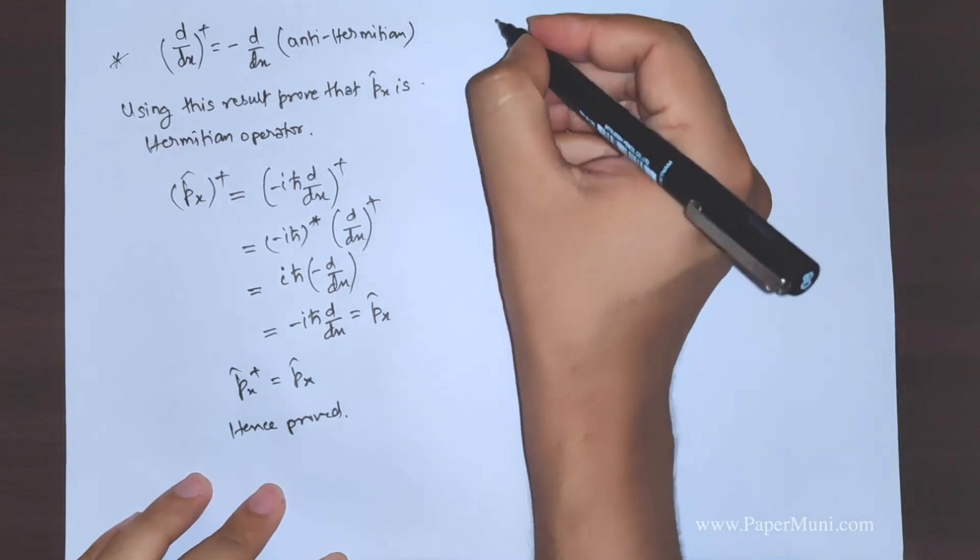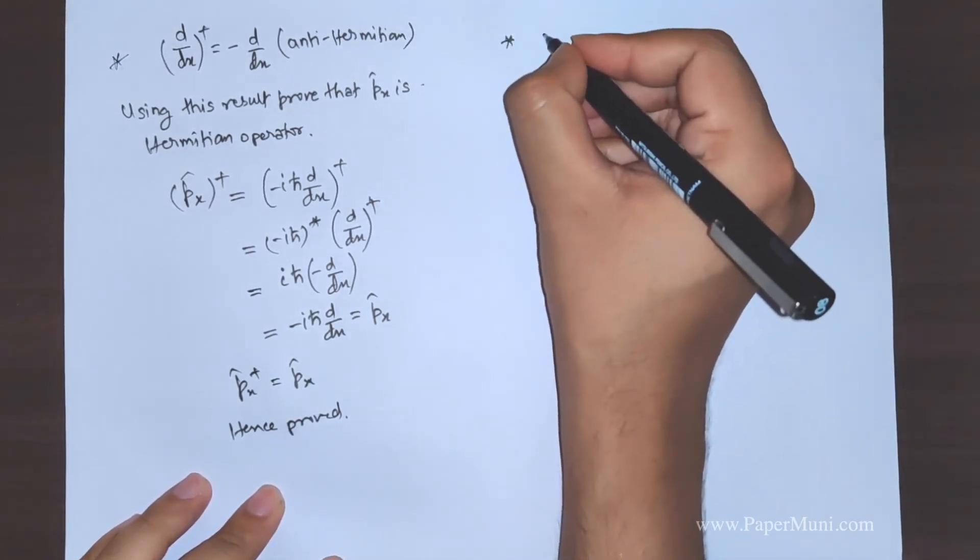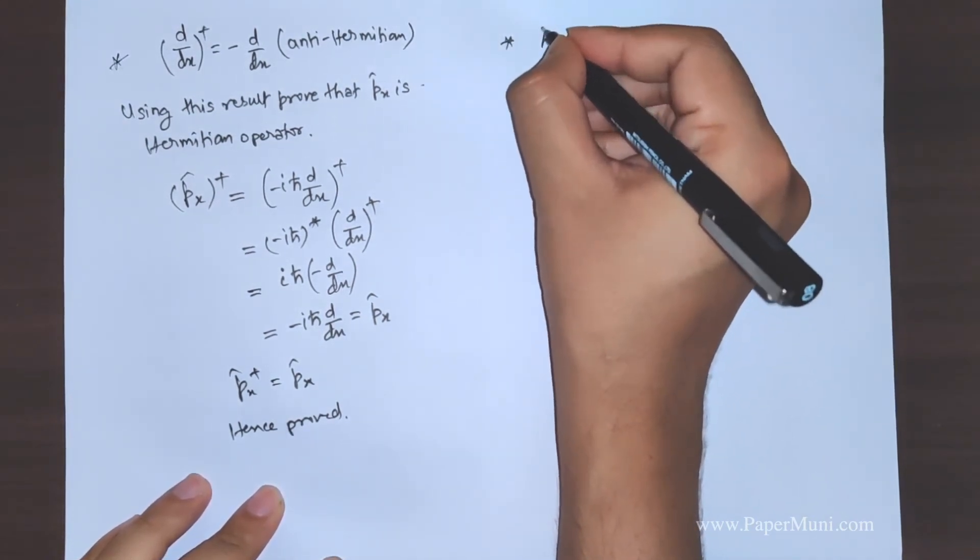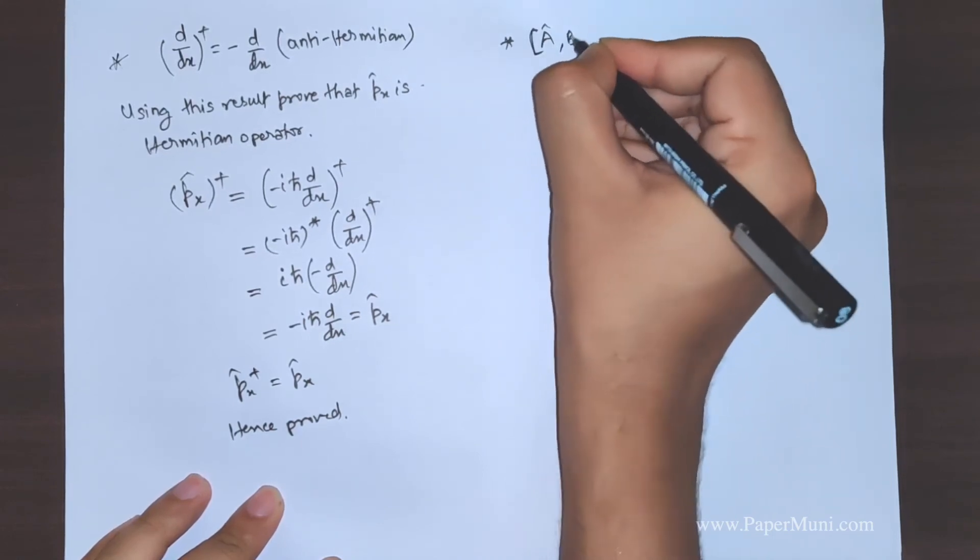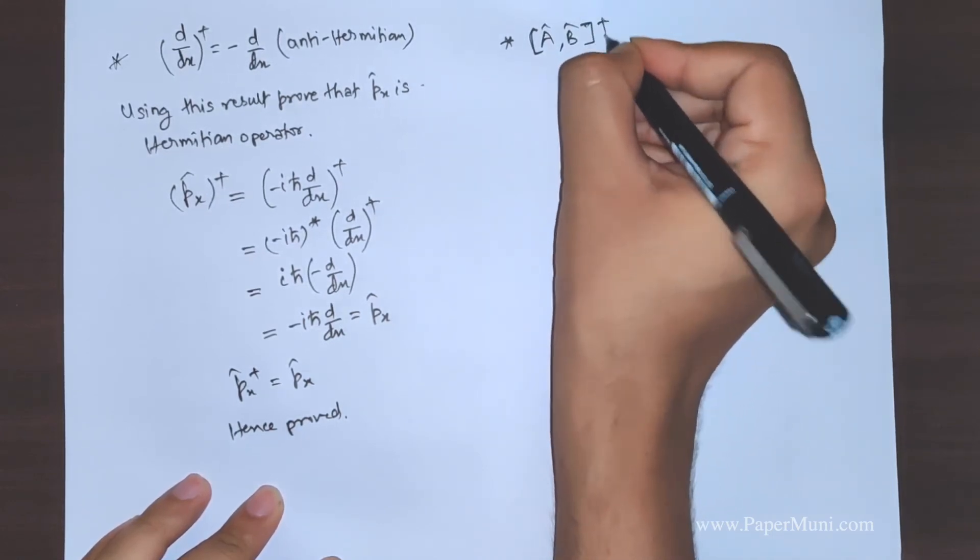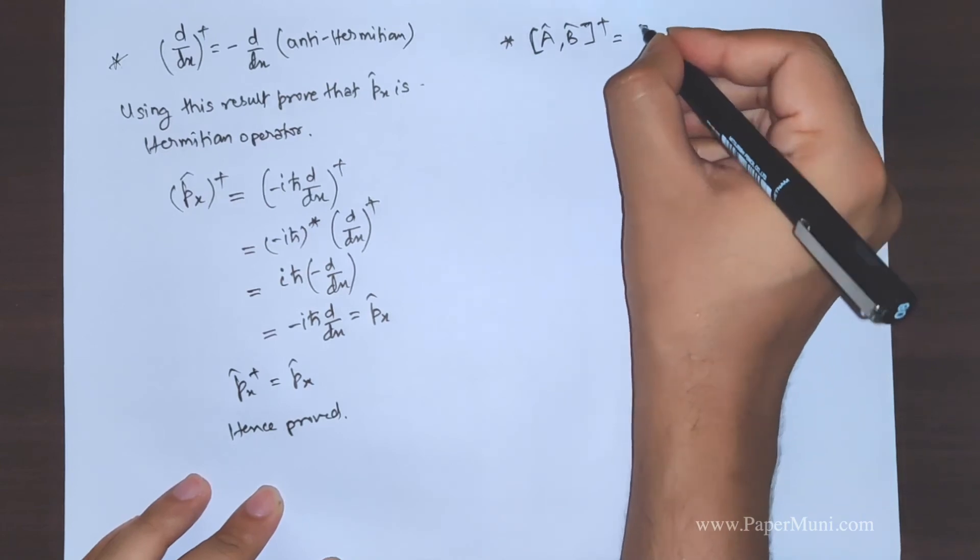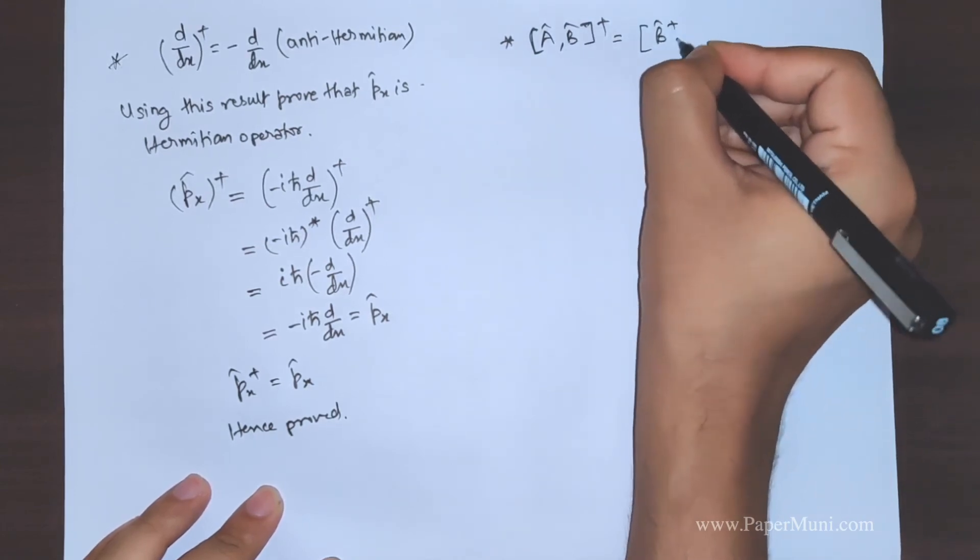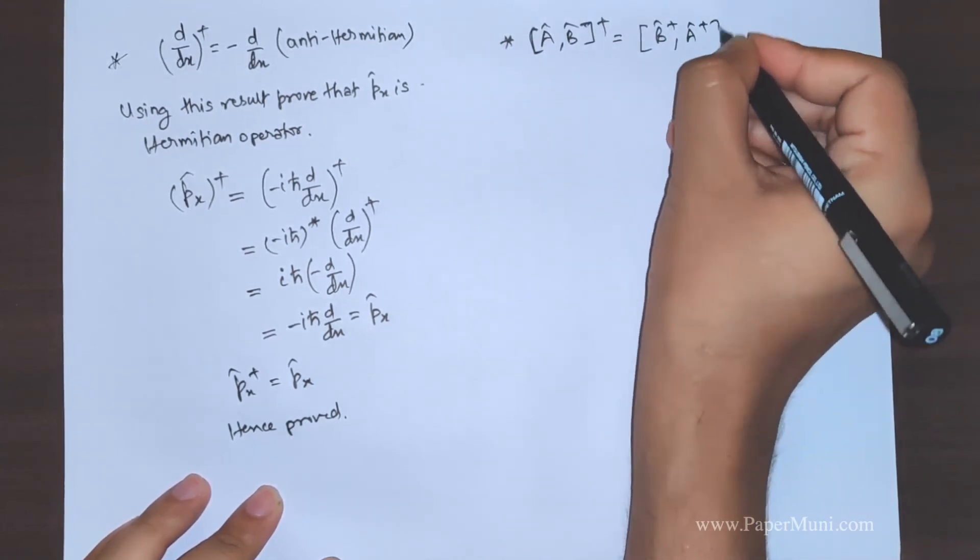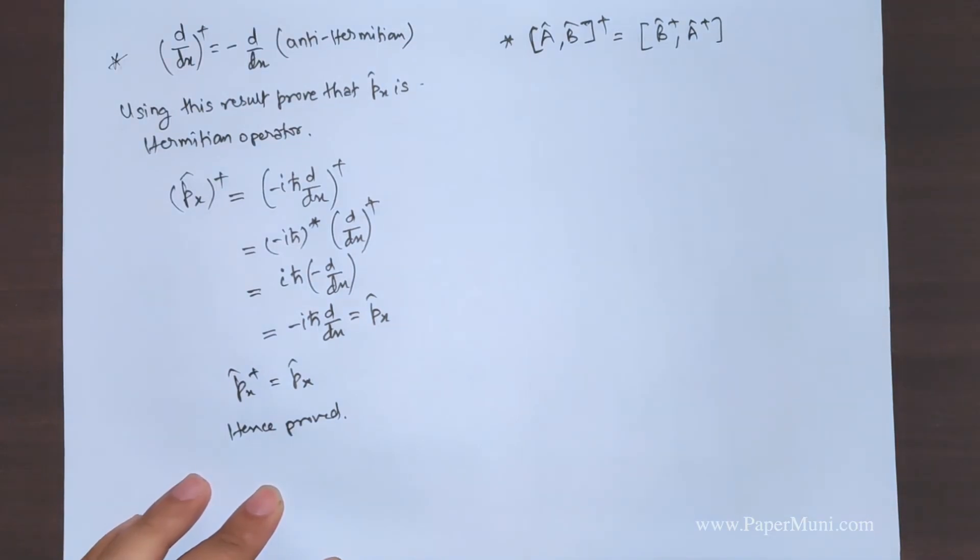Now a small property here, that if you take a dagger of a commutator, it gives you b dagger a dagger, it can be proven.